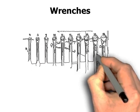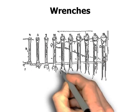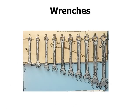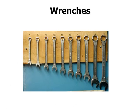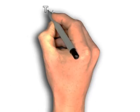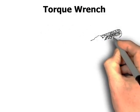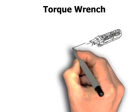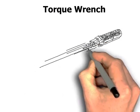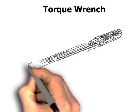Torque wrench. Some bolts require a specific amount of torque; otherwise they can be damaged by excessive torque. In that case, a torque wrench is used to apply a specific, calculated torque.